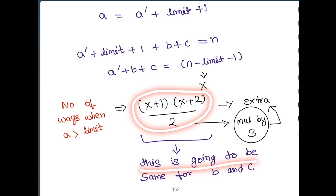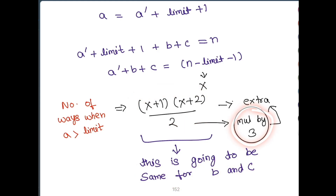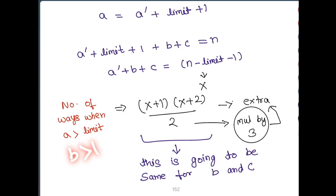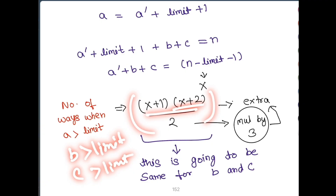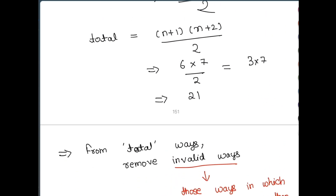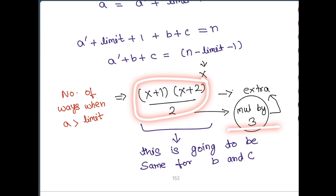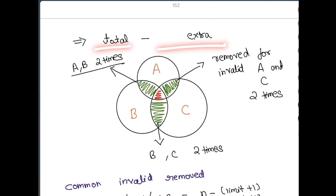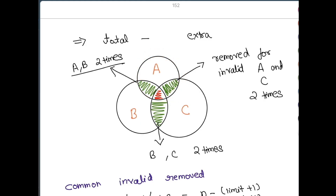So the extra value to subtract is 3 * (x+1)*(x+2)/2, multiplied by 3 because we apply it for a, b, and c. We subtract this extra from the total. But using inclusion-exclusion, we realize we may be removing some common invalid values multiple times — for example when a and b are both over the limit simultaneously, that overlapping area is being subtracted twice.